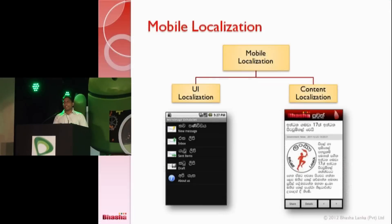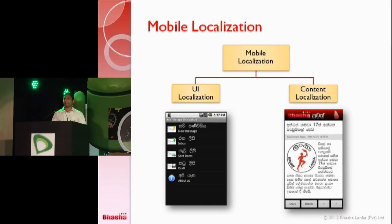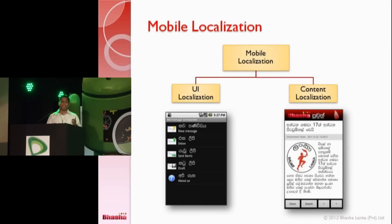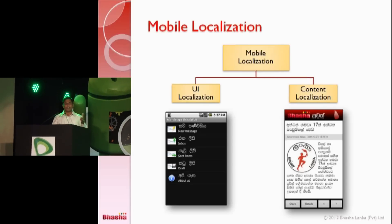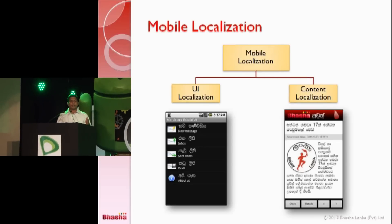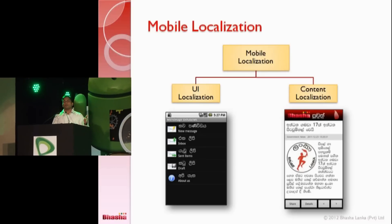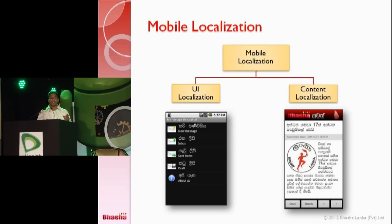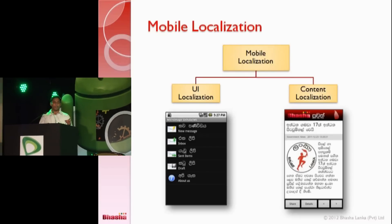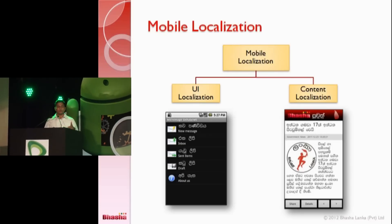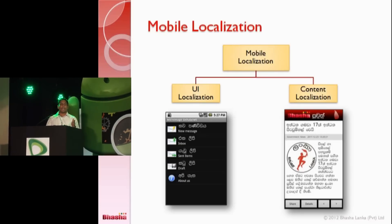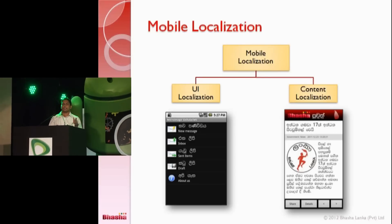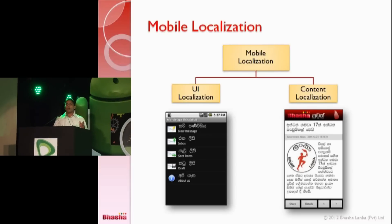Going back to our subject, mobile localization can also be categorized into UI localization and content localization. This is an example — two examples. The left one is Micromatch Sinhala SMSR, currently available on Android Market, and this screenshot is an example of UI localization — you can see the menus are localized. The other one, Basha Pua, is an example of content localization. The UI is not localized but the content is localized.